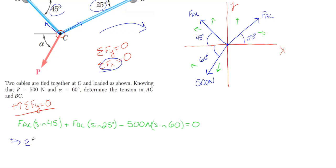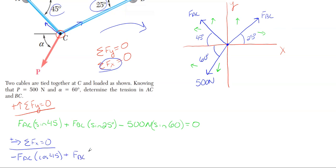Moving to the X direction: everything to the right is positive and everything to the left is negative. FAC is pointed left so it's minus FAC times cosine of 45 degrees. FBC is pointed to the right so it's positive FBC times cosine of 25 degrees. Then minus 500 newtons times cosine of 60 degrees. All of those must cancel to be zero.